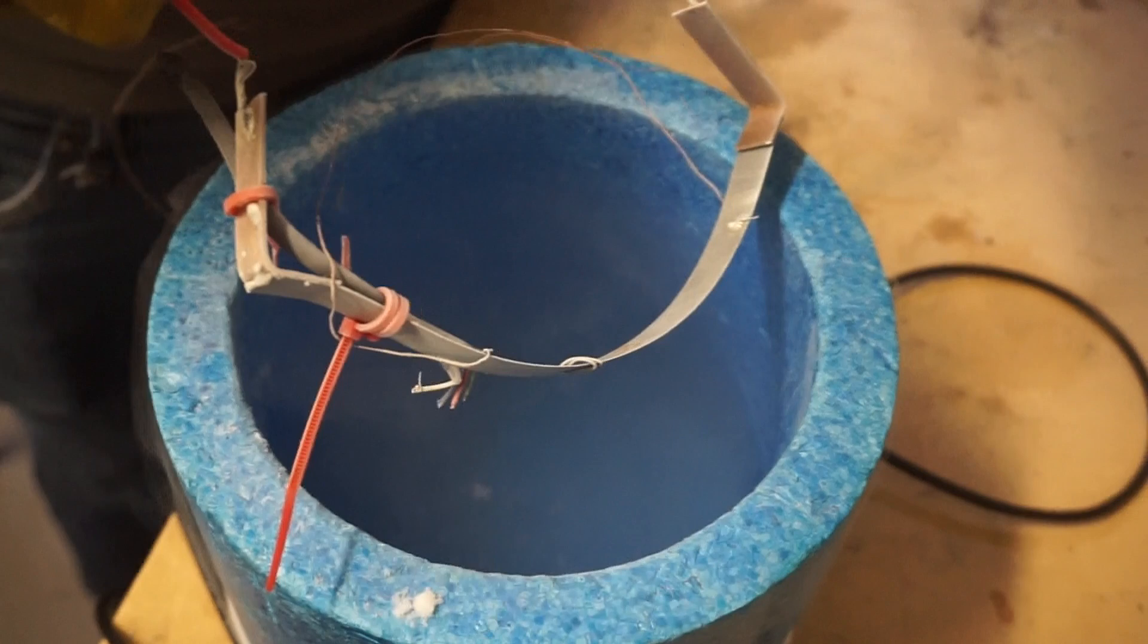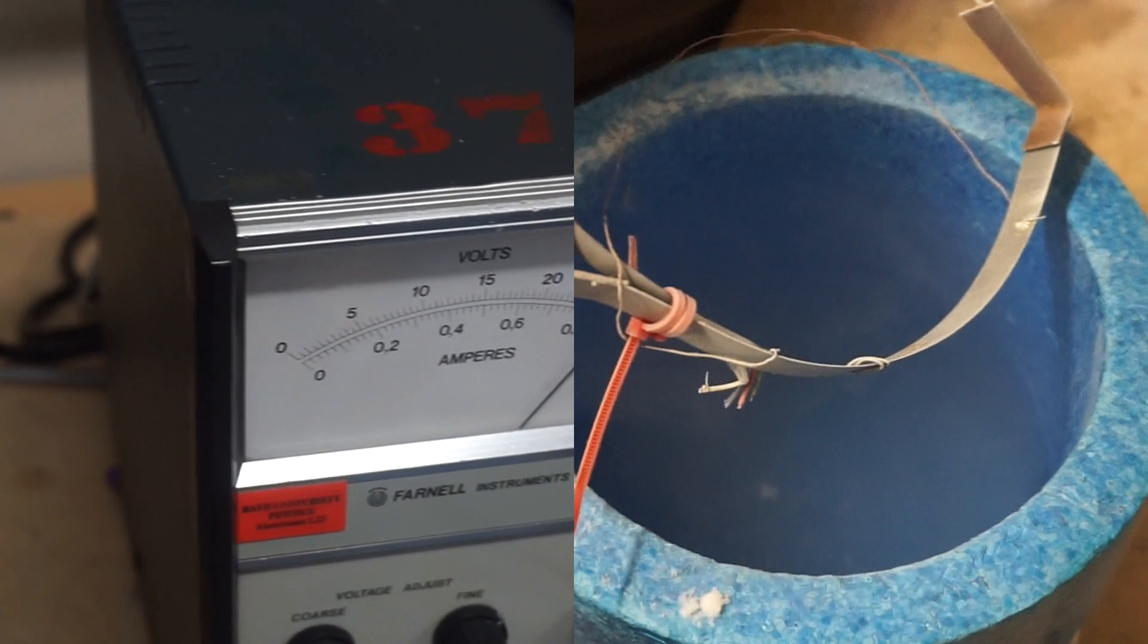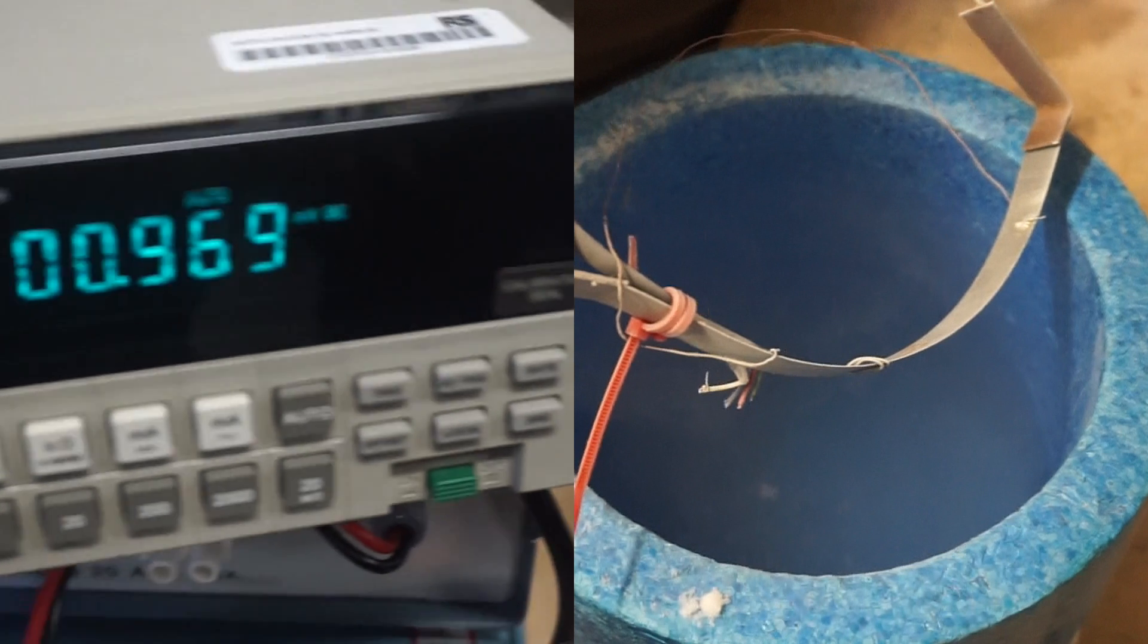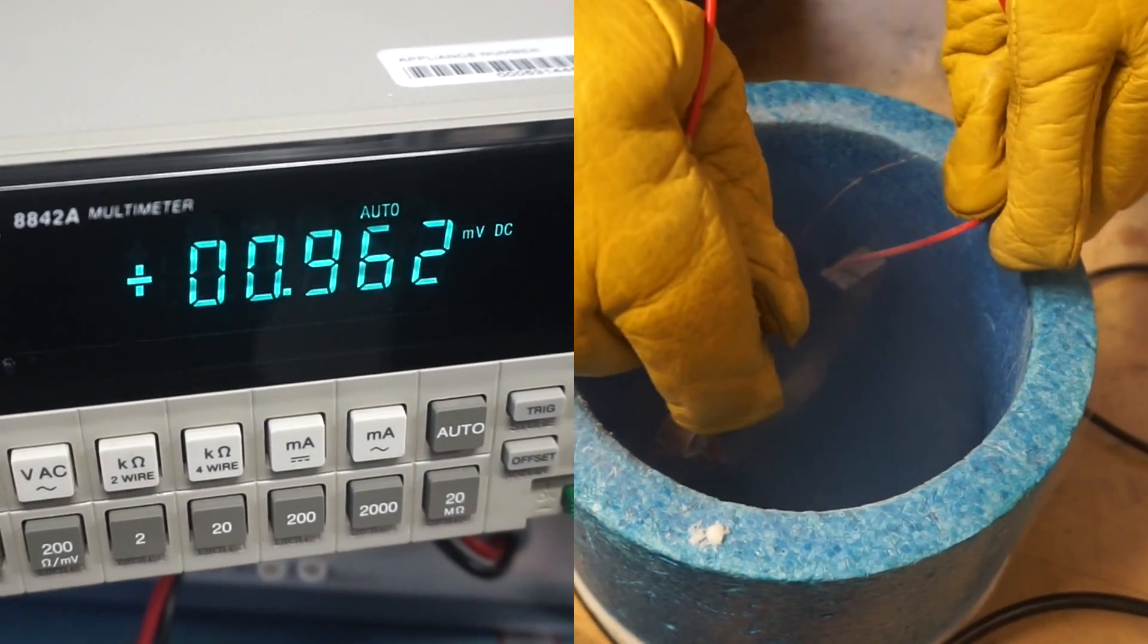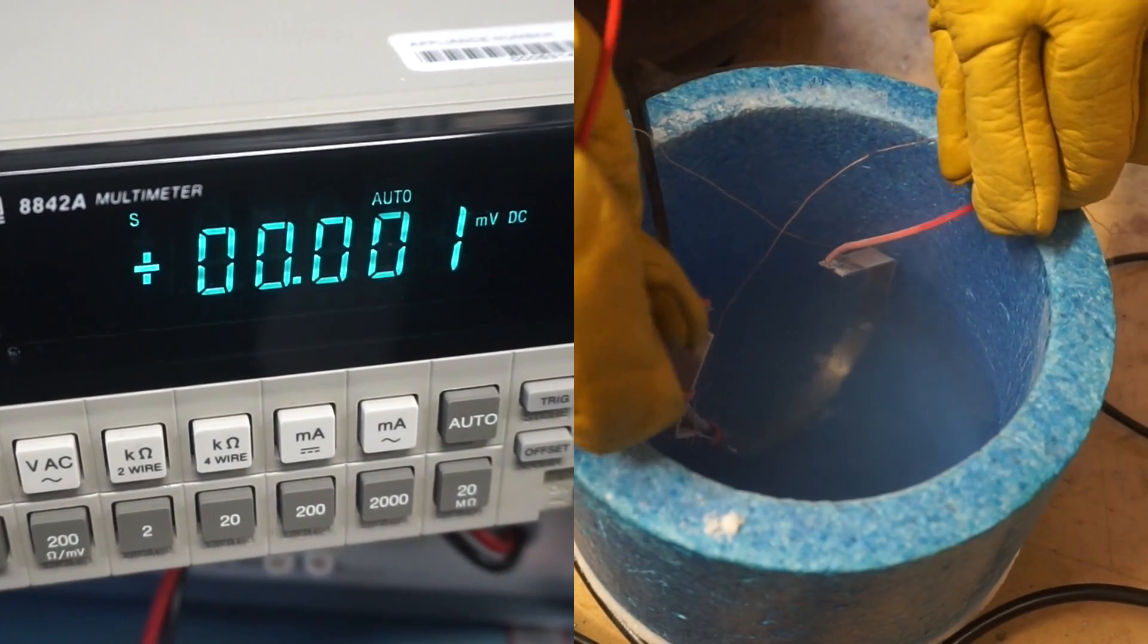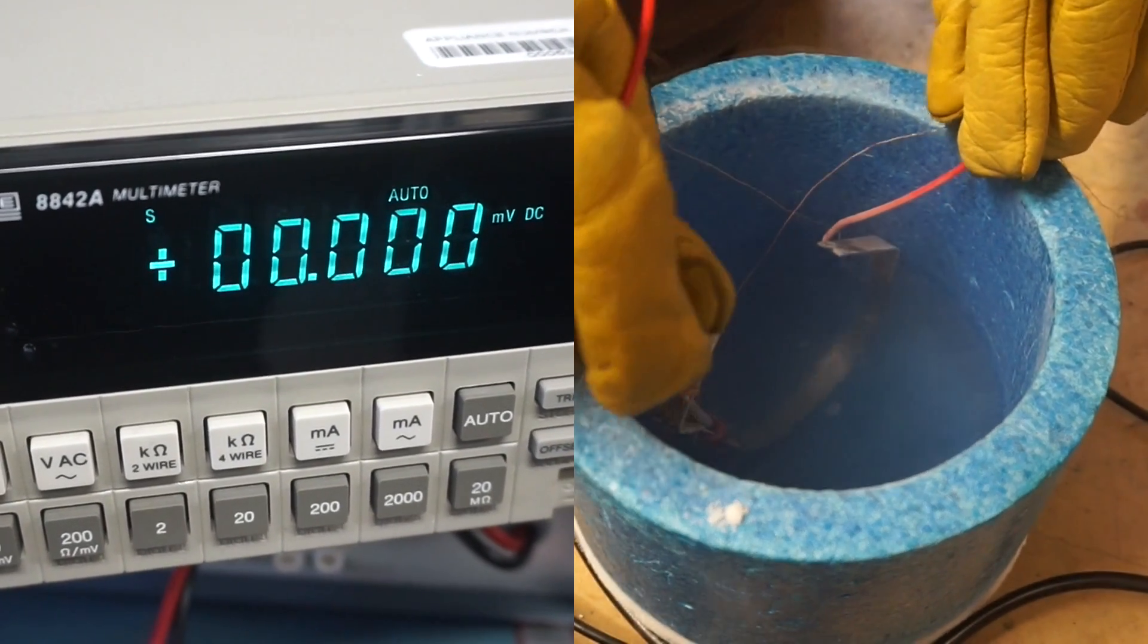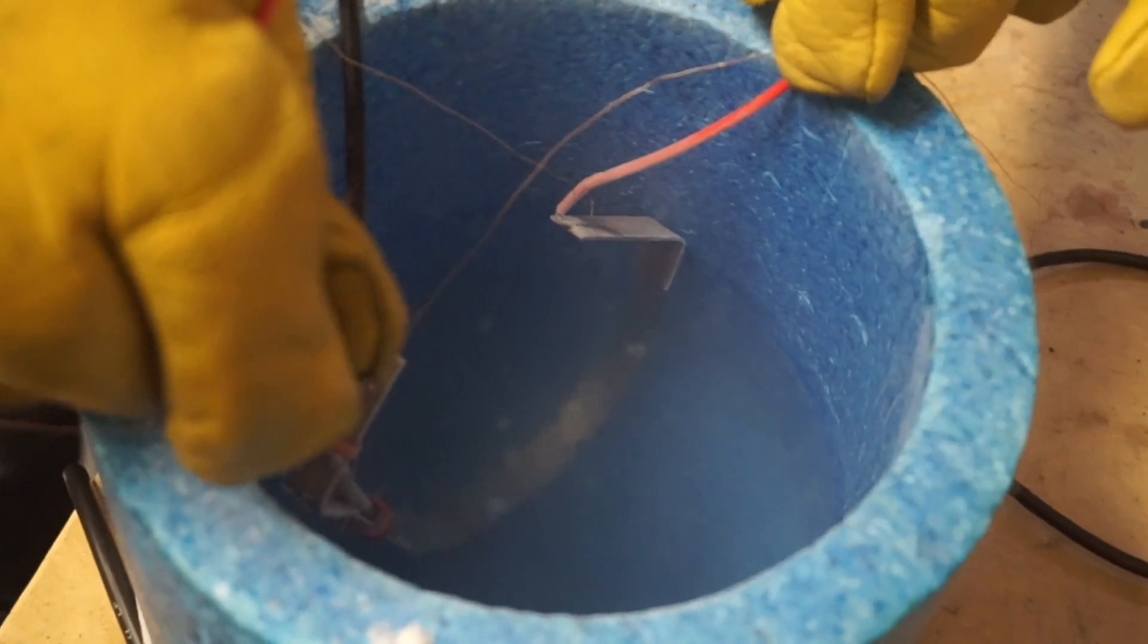Here we have taken a section of the superconducting tape and connected it to a power source. We have also connected a voltmeter across it to measure the potential difference. We have applied a constant current of about 0.9A. As you can see, as the tape is submerged in liquid nitrogen, the voltage falls to zero. Since resistance is proportional to voltage through Ohm's law, the resistance is also zero. This shows that the tape has been cooled below its critical temperature and is now in the superconducting state.